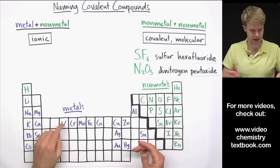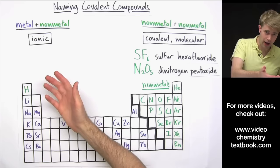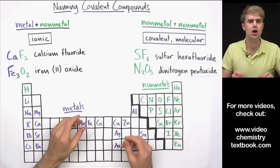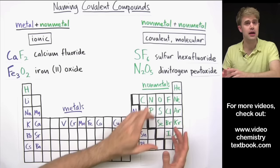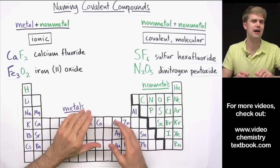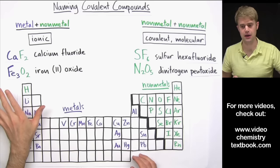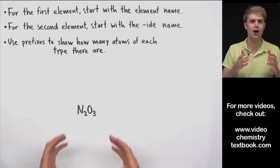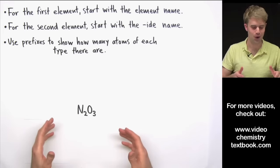Some examples of ionic compounds are calcium fluoride and iron 2 oxide. So if you have to name a compound, the first thing you want to do is figure out what type of elements are in it. If it's a metal and a nonmetal, it's ionic. If it's a nonmetal and another nonmetal, it's a covalent or molecular compound — and that's what this video focuses on. Here's our first chemical formula: N₂O₃.